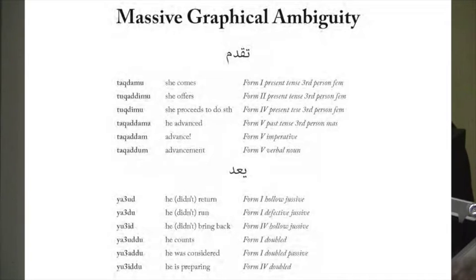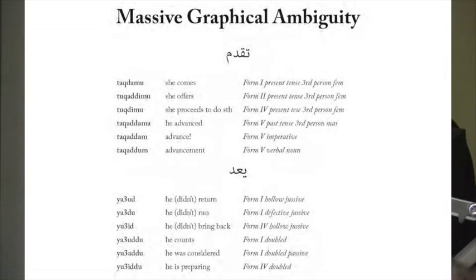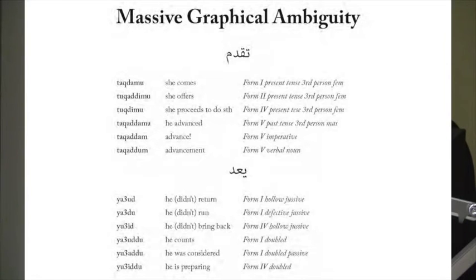Another great example is ya'ud. Ya'ud is just the greatest word in Arabic because it can be so many things: the jussive of ada ya'udu (lam ya'ud), the jussive of ada ya'udu, or just the regular present tense meaning 'to count' (ya'uddu), the passive of that meaning 'to be considered' (yu'addu), or a form-four present tense. These are not similar in meaning at all — they're completely different words that you don't want to group together.